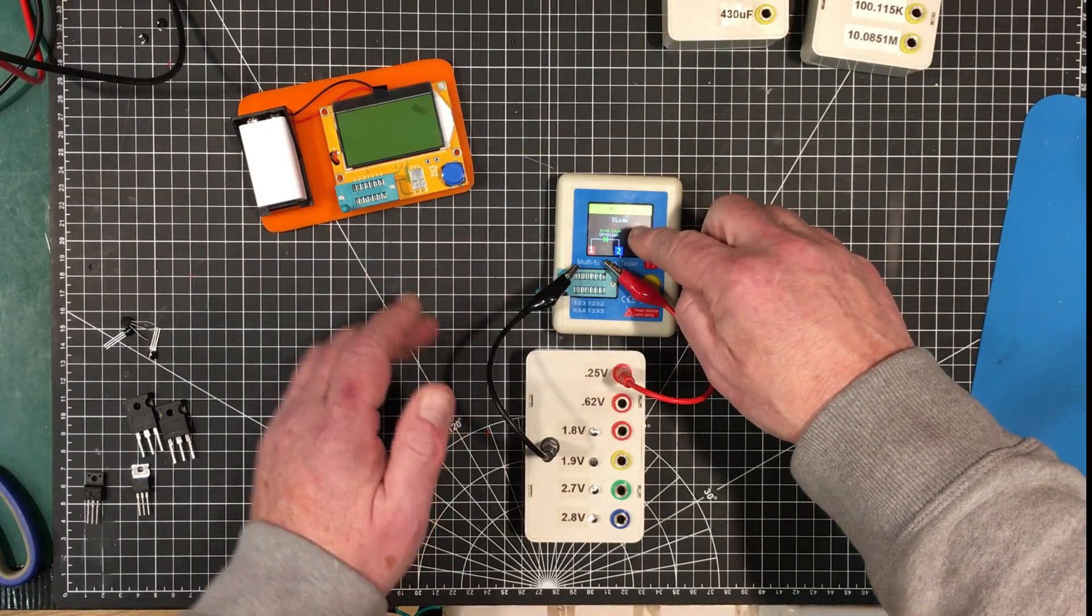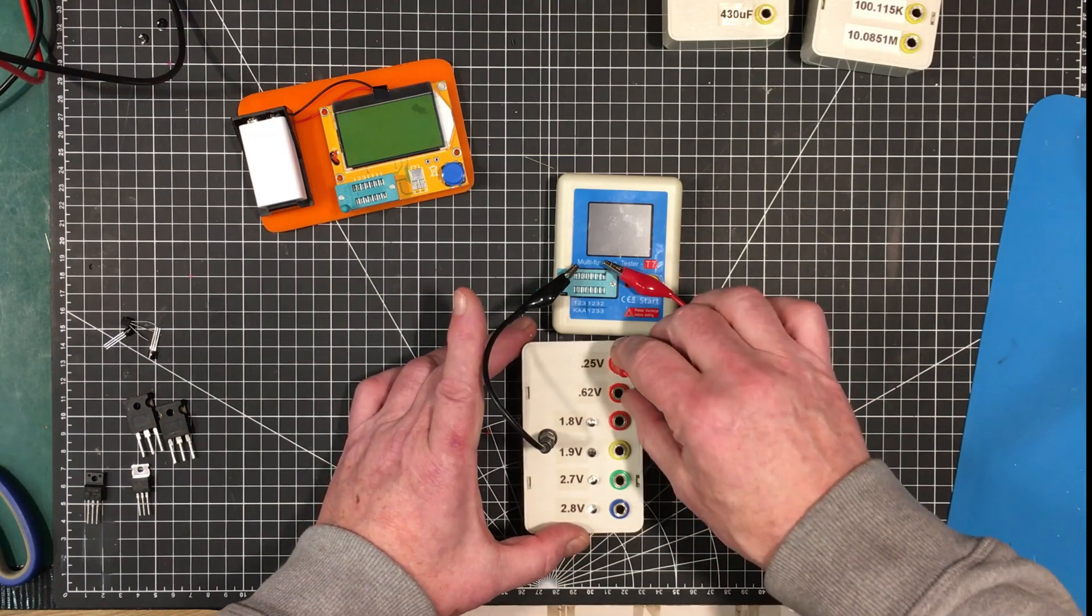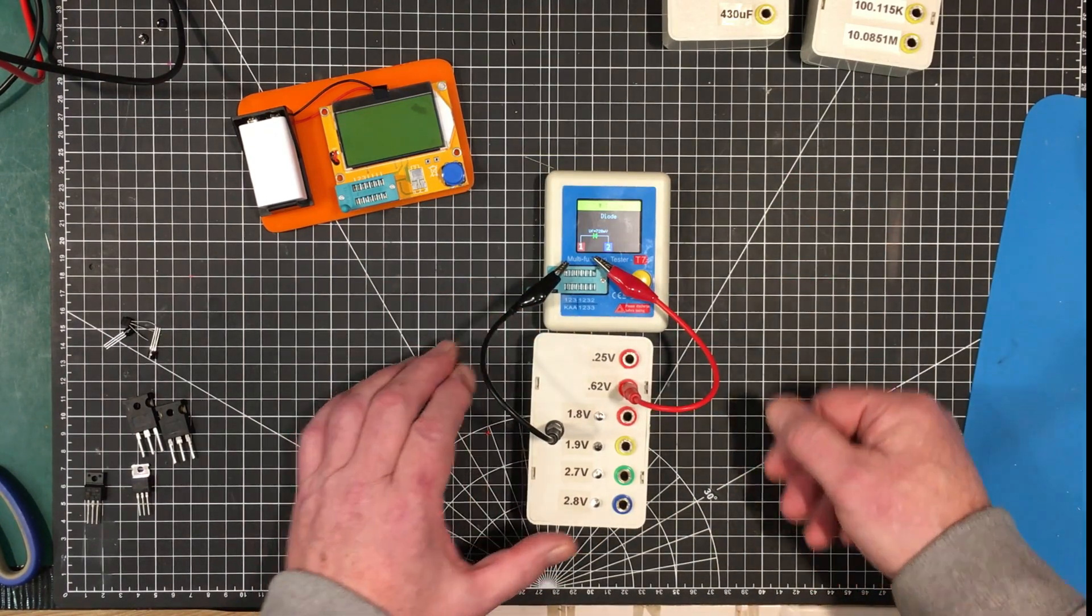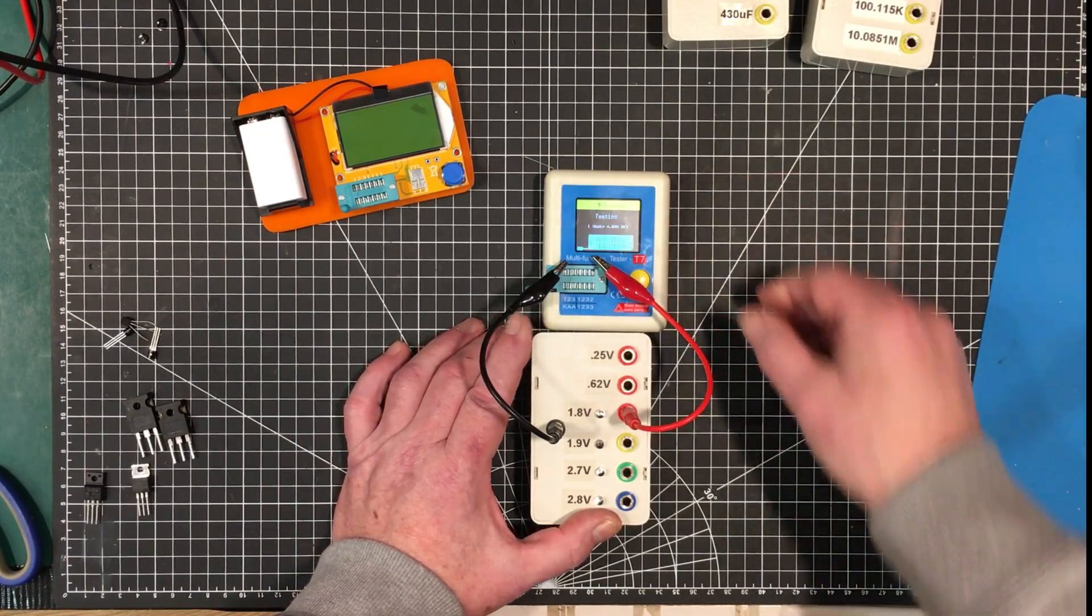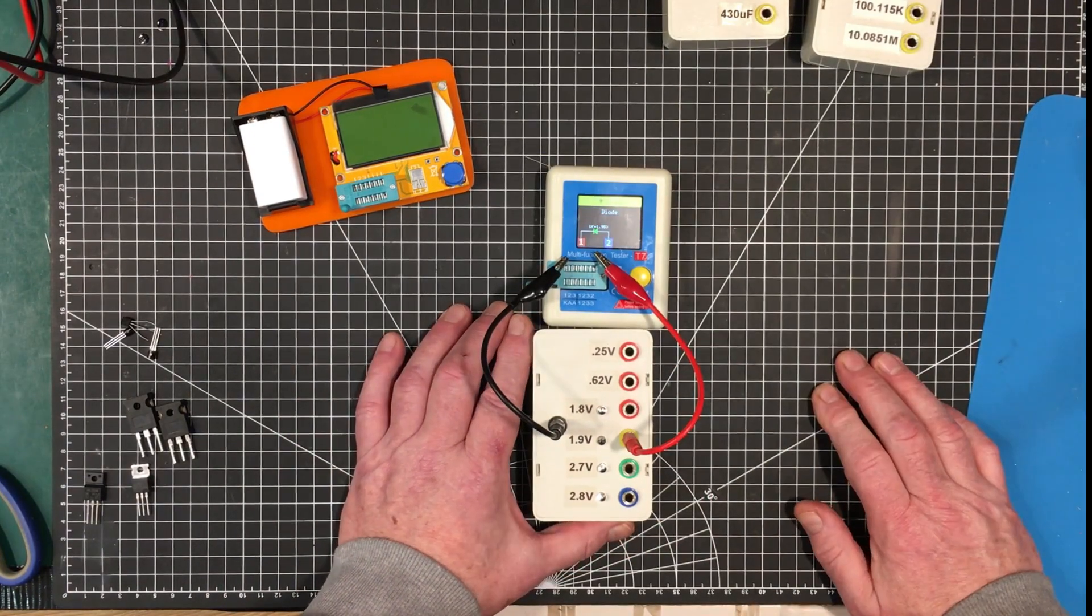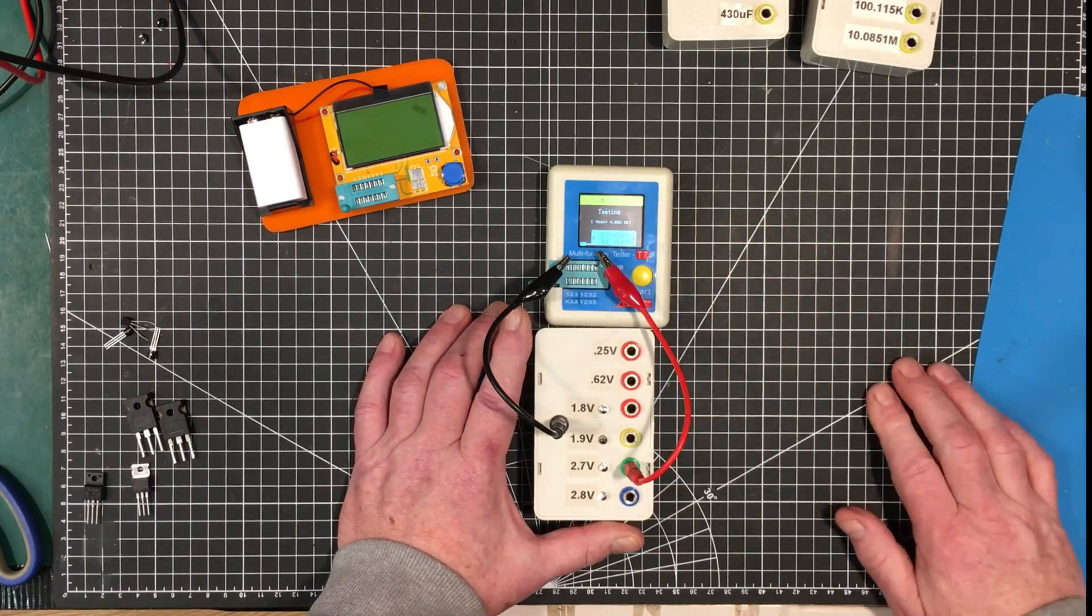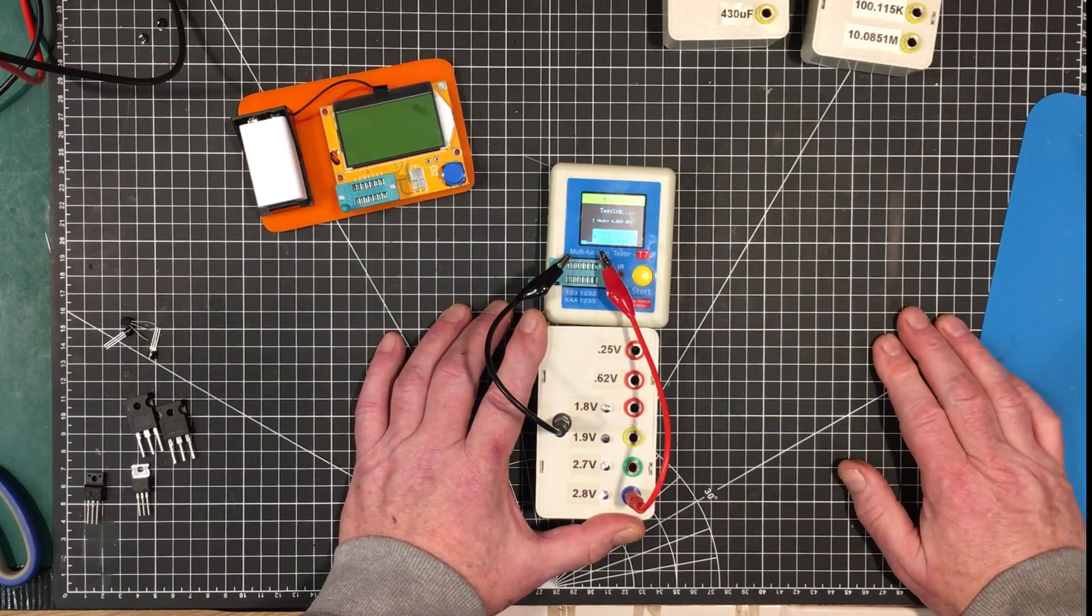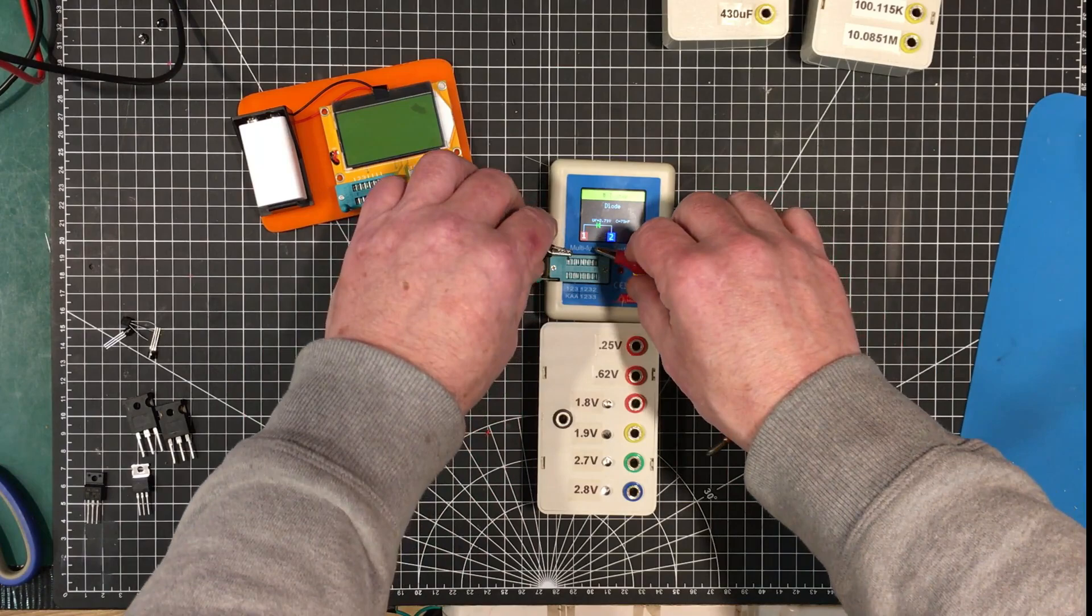Let's see how the other one handles the diodes. All right, that's pretty good. It's not as close as this one was. But then again, it depends on the amount of current that's passing through it. They're both pretty close though. This one seems to be a bit quicker in its testing too. So they're about the same on the diodes, I would say.